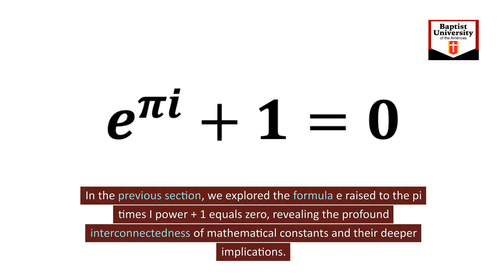In the previous section, we explored the formula e raised to the pi times i power plus one equals zero, revealing the profound interconnectedness of mathematical constants and their deeper implications.